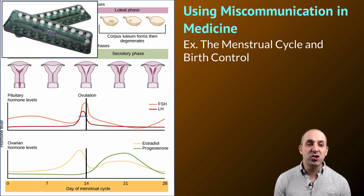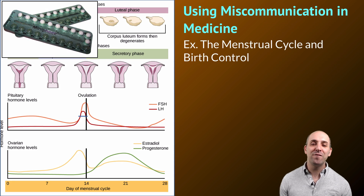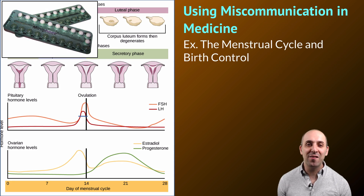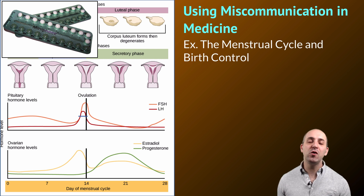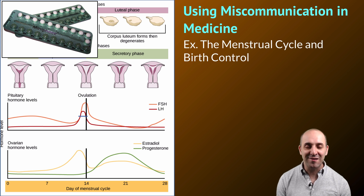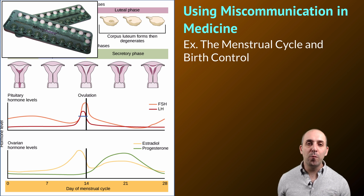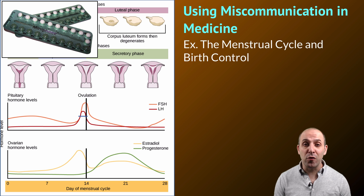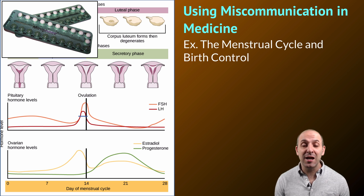Hormonal birth control takes advantage of this by providing the body with an artificially elevated level of estrogen and progesterone. In so doing, it sends a miscommunication signal to the body that an egg cell has already matured and been released, even though it hasn't. Since there is no actual mature egg cell in the reproductive system when birth control is being taken, there is no ability for fertilization to occur, and a woman on hormonal birth control cannot get pregnant while those hormones are present.